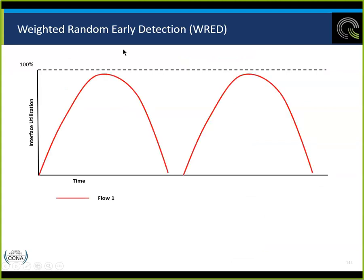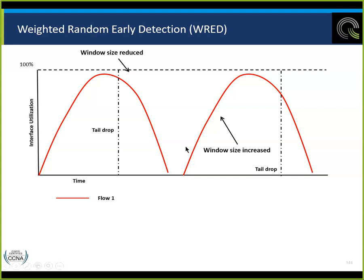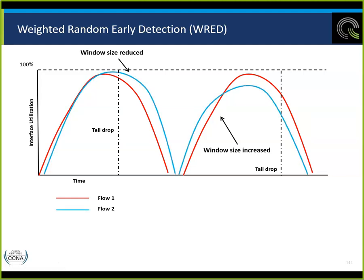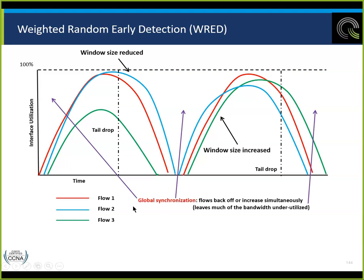After we exceed the maximum threshold — full queue — all packets are dropped. This is tail drop. Weighted random early detection (WRED): we establish minimum and maximum thresholds and a window size. As the window size gets increased and decreased based on flows, global synchronization causes all flows to back off or increase simultaneously, leaving bandwidth underutilized.